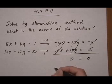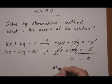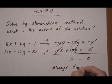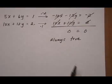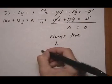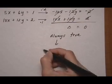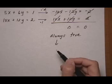This is a true statement. Always true. If you get a statement that's always true, the conclusion will be we have an infinite number of solutions because it means we have two lines laying right on top of each other.